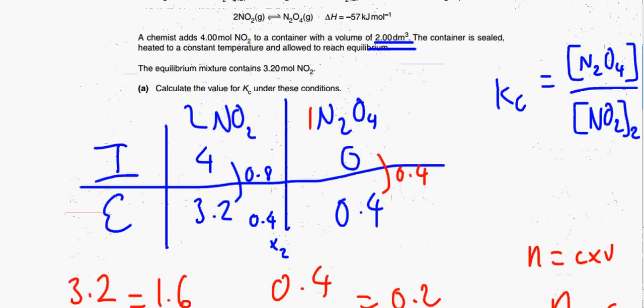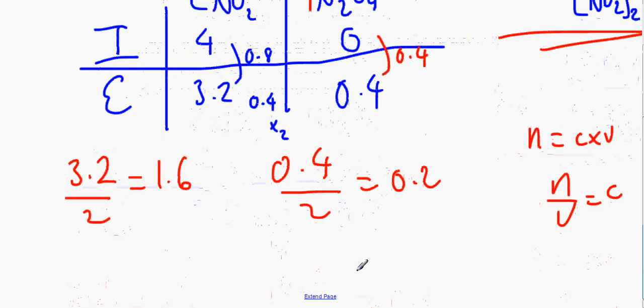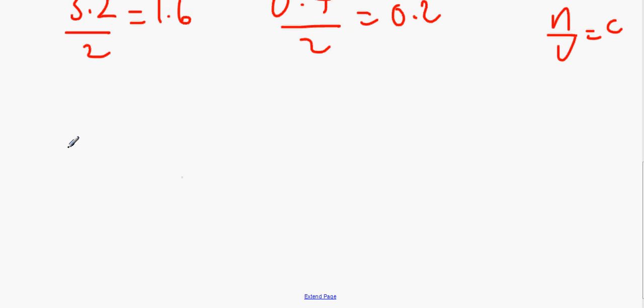If we put this into the equilibrium constant expression, we would have Kc equals, let me do a different colour, Kc equals, let's put it in brackets, it will be 0.2 over 1.6 squared.